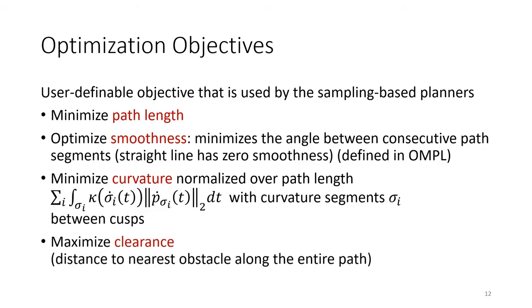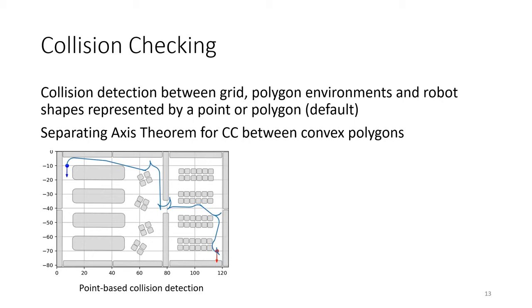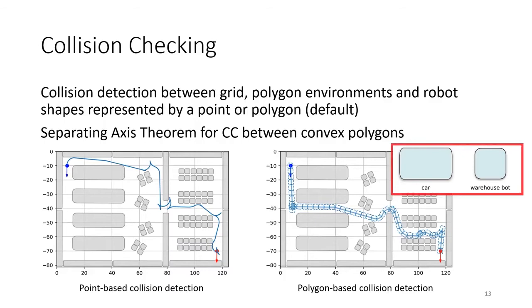In many path planning libraries the robot is assumed to be a point, which simplifies the collision checking against obstacles. To bring BenchMR closer to real-world mobile robot applications, our default collision detection is based on polygons. As shown on the right, the robot can be represented by convex polygons which are tested for collision with both grid-based and polygon-based environments. We use the separating axis theorem for efficient collision checking between convex polygons.